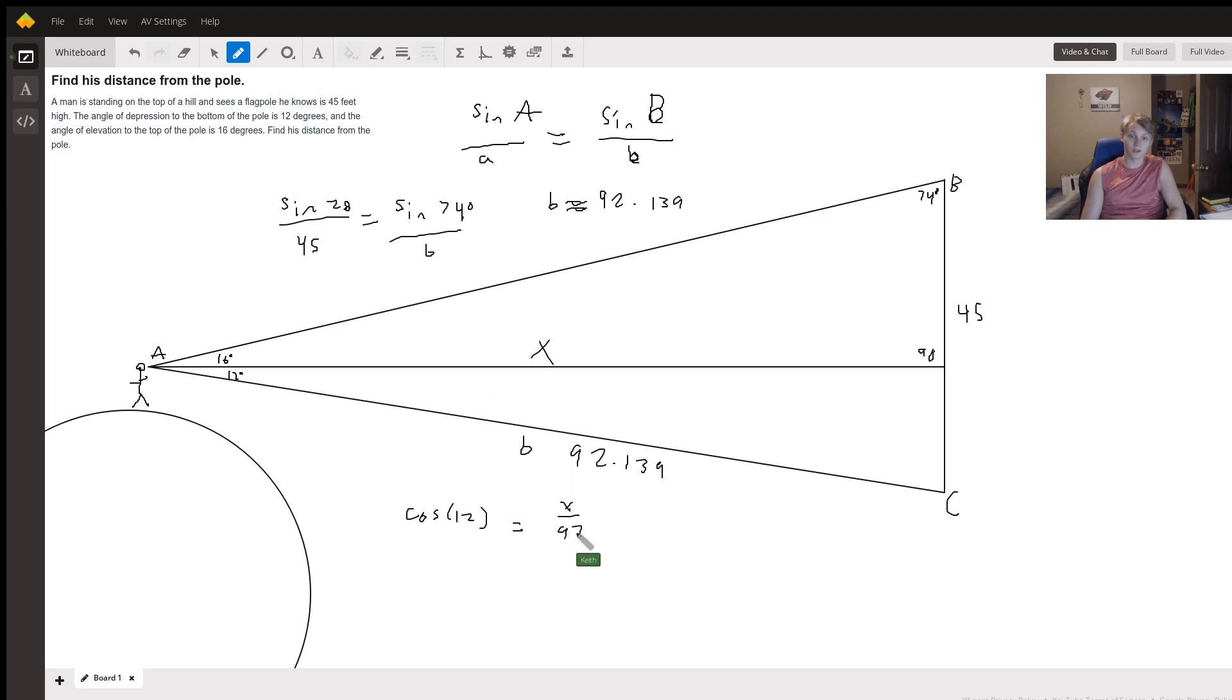And this is going to give us our answer. So if we use some algebra here, we can find that the length from the person to the flagpole is equal to about 90.126 feet.